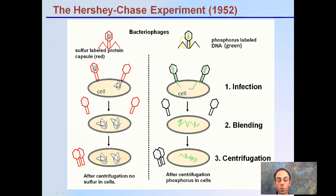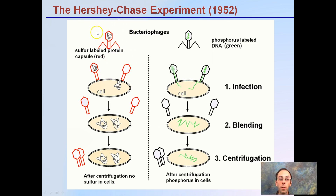However, where the DNA was labeled and the cells were purified, radioactive labeling was present inside the cells. This provided evidence that it wasn't the protein at all. Proteins were originally thought to be the source of genetic information because there are so many different proteins, while DNA only has four different bases.